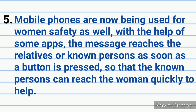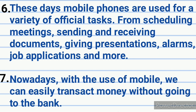Fifth, mobile phones are now being used for women's safety as well. With the help of some apps, the message reaches the relatives or known persons as soon as a button is pressed, so that the known persons can reach the woman quickly to help. Sixth, these days mobile phones are used for a variety of official tasks from scheduling meetings, sending and receiving documents, giving presentations, alarms, job applications and more.